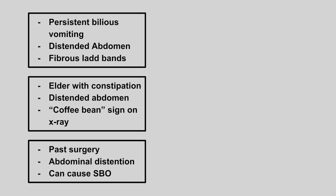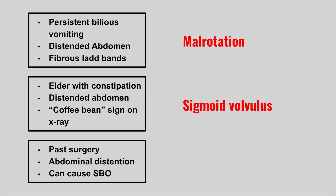The next patient has persistent bilious vomiting, a distended abdomen, and fibrous Ladd bands — this is malrotation. The next patient is an elder with constipation, a distended abdomen, and a coffee bean sign on x-ray — this is sigmoid volvulus.